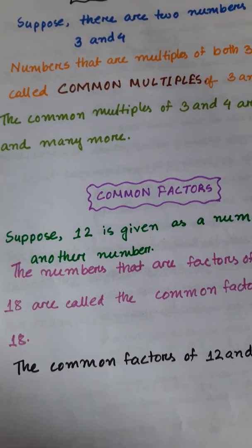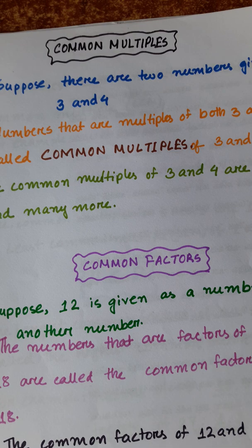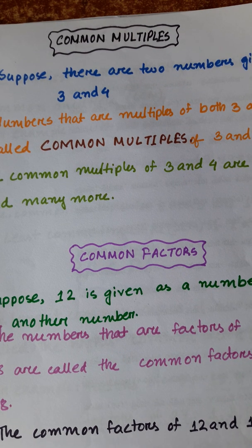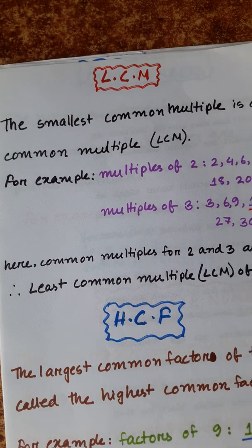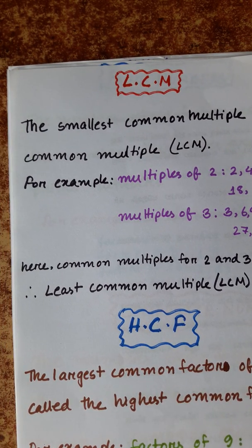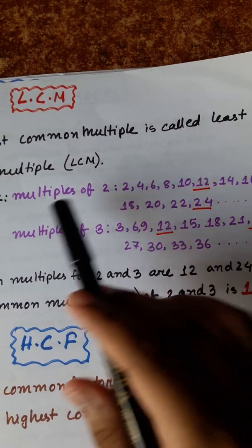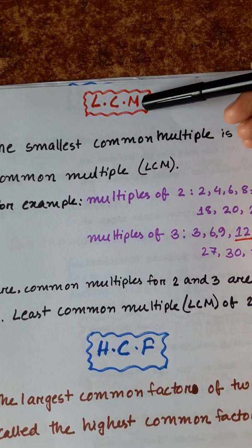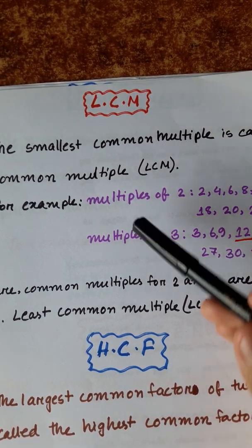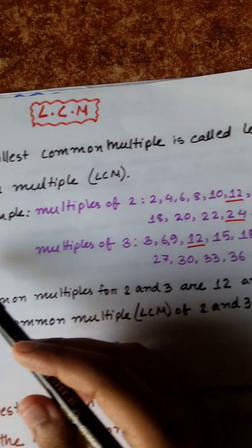So, if two numbers share the same multiples, those are called their common multiples. If two numbers share the same factors, those are called their common factors. Now let's learn about LCM and HCF. LCM — the smallest common multiple is called the Least Common Multiple, or LCM.